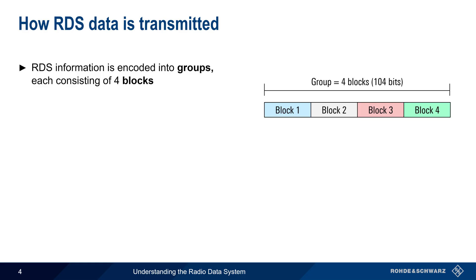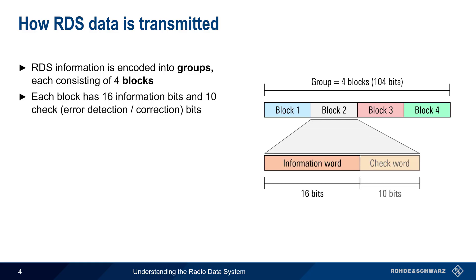These blocks are each 26 bits long and contain 16 information bits and 10 check bits that are used for error detection or correction. Different types of data or messages can be encoded into these data blocks, and we'll spend most of the rest of this presentation going over the most important messages.